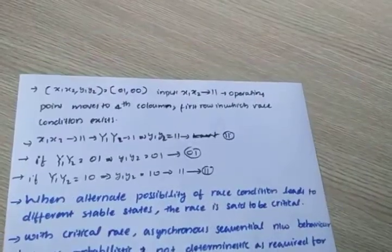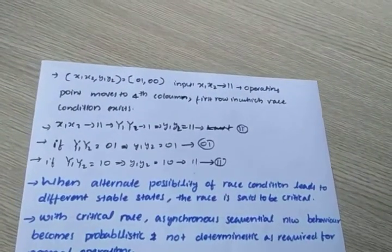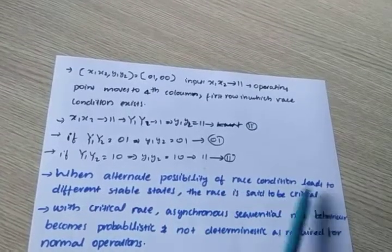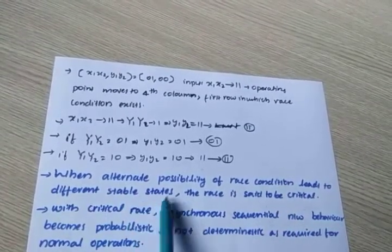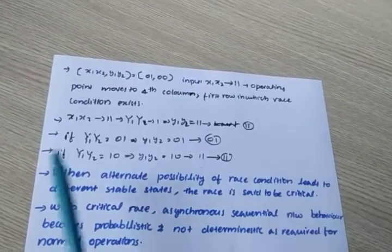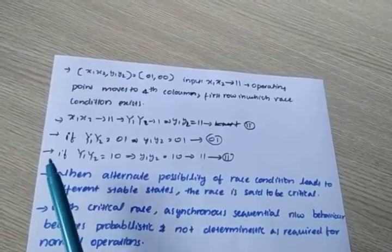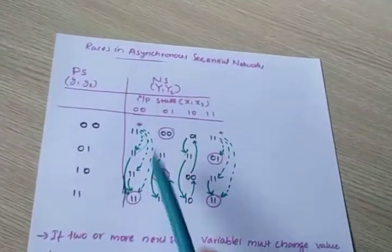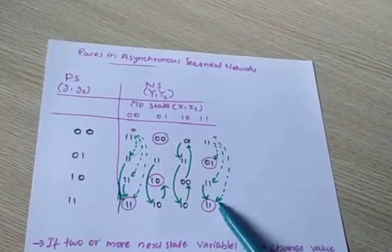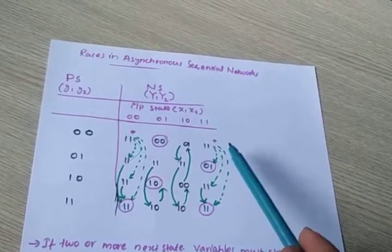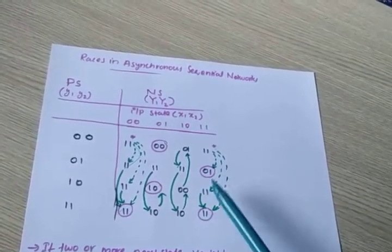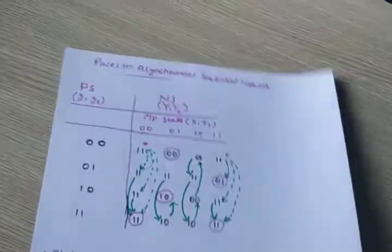Another type is the critical race. When alternative possibilities of the race condition lead to different stable states, then the race is said to be critical. That means here we have two different stable states, and due to different races the system will go to different stable states — it is called a critical race condition.